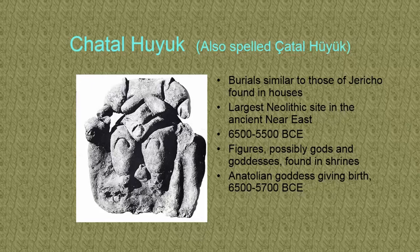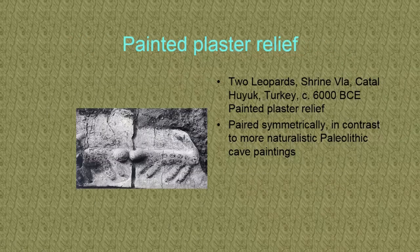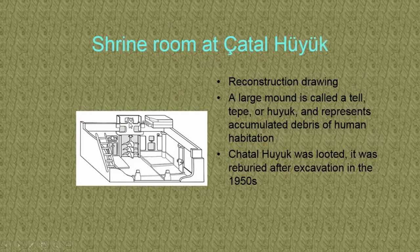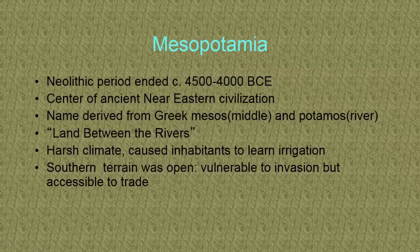This is a statue from a place called Katal Hyuk in Turkey. The burials there are a lot like those found in Jericho — found in houses — because people would often bury their dead right under their house so the dead could always live with them. This is probably the biggest Neolithic site we've found, from 6500 BCE. They found many figures in shrines; this one is actually a goddess giving birth. Then we have a relief — two leopards in painted plaster — very symmetrical and much more abstract than the Paleolithic cave paintings. This is the shrine room where that goddess would have been found.